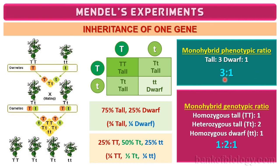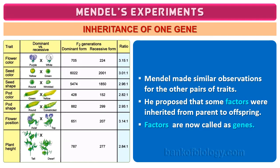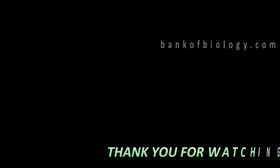So we have learned two types of ratios: the F2 monohybrid phenotypic ratio is 3:1, and the monohybrid genotypic ratio is 1:2:1. These are the results of the classical experiments conducted by Gregor Mendel. Mendel made similar monohybrid crosses for other characters as well, and in all crosses he got the same phenotypic and genotypic ratios. Based on these experiments, Mendel concluded that some factors were inherited from parents to offspring — these factors are now known as genes. The detailed explanation and Mendel's remaining works will be covered in the next episode. If you have any doubts or suggestions, please mention them in the comment box. Thank you, have a good day!